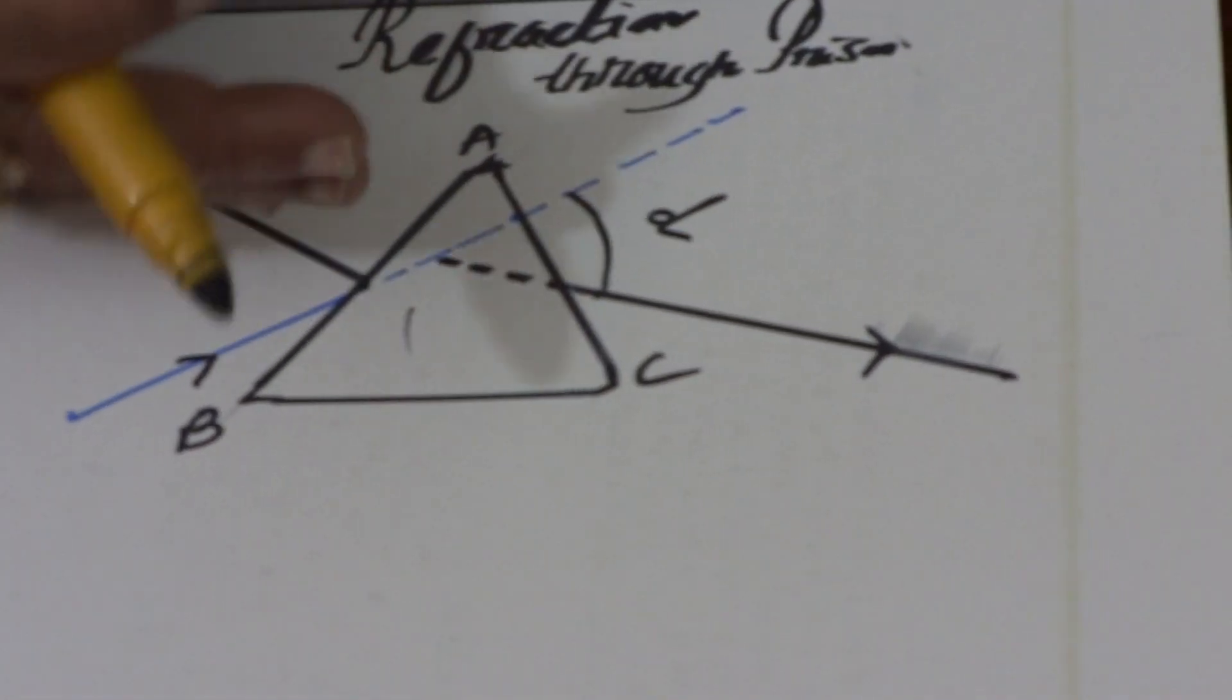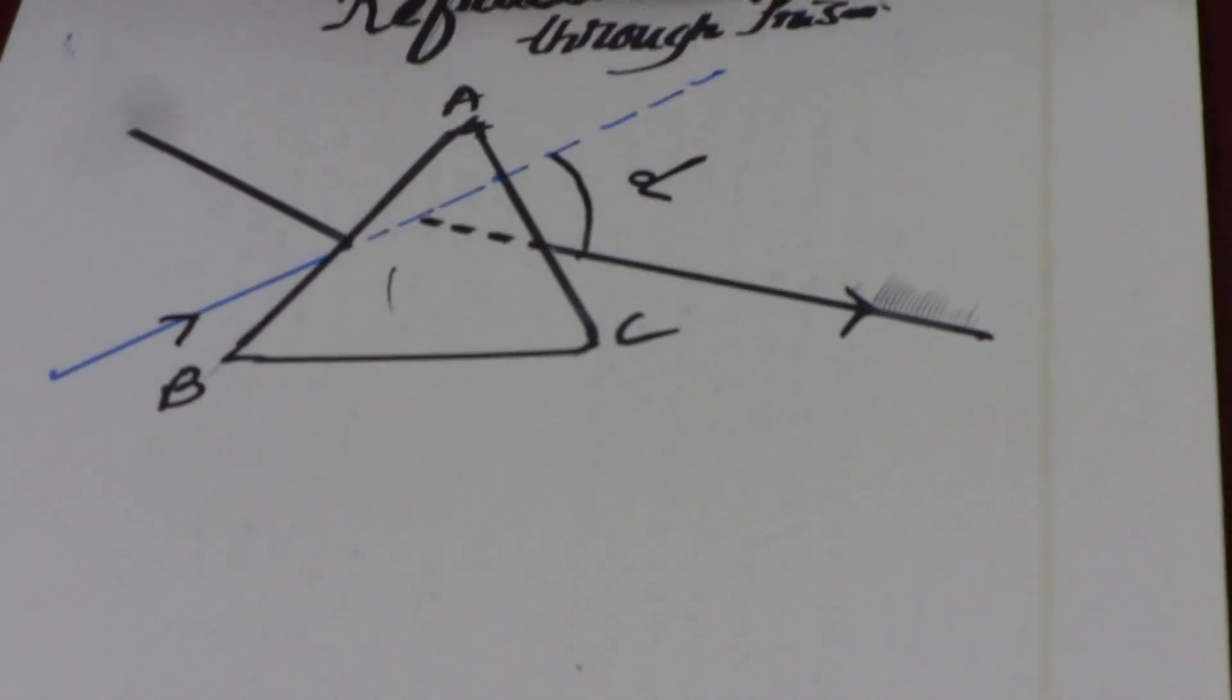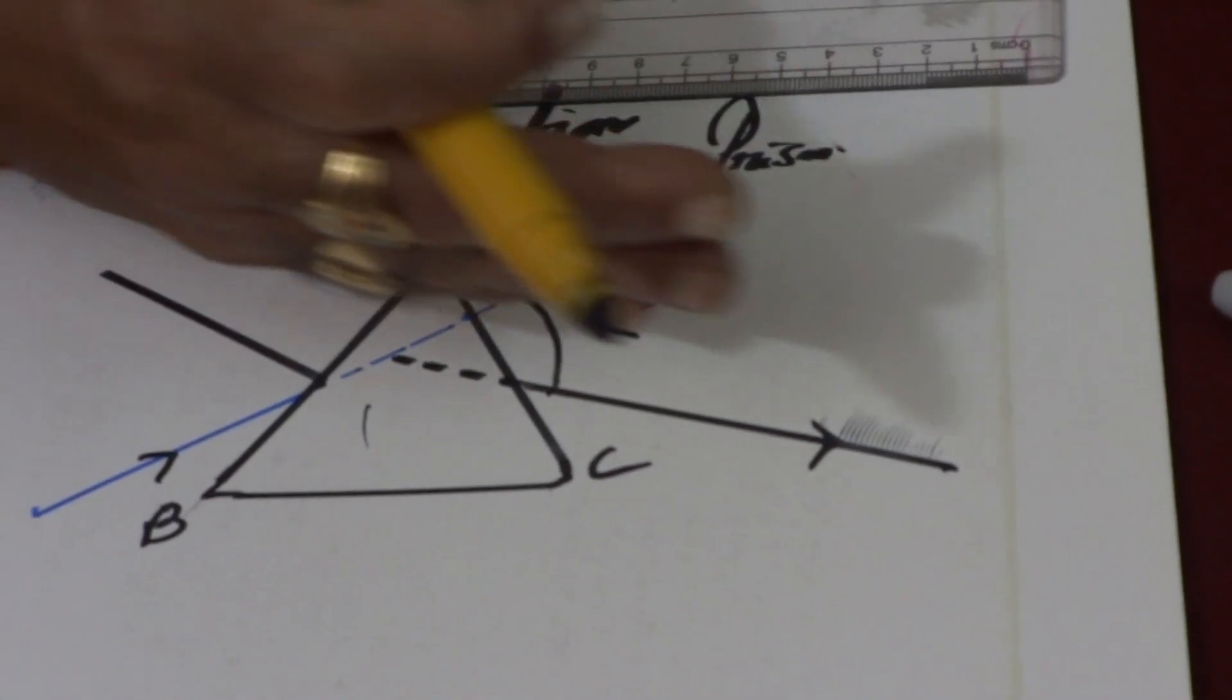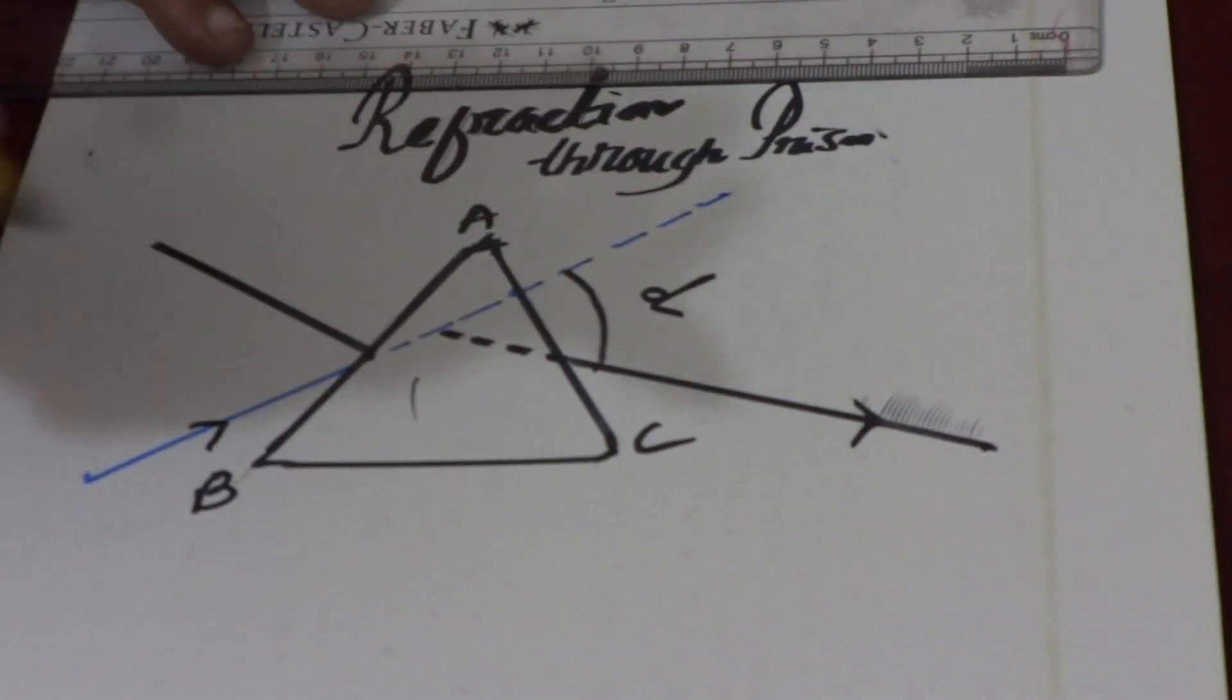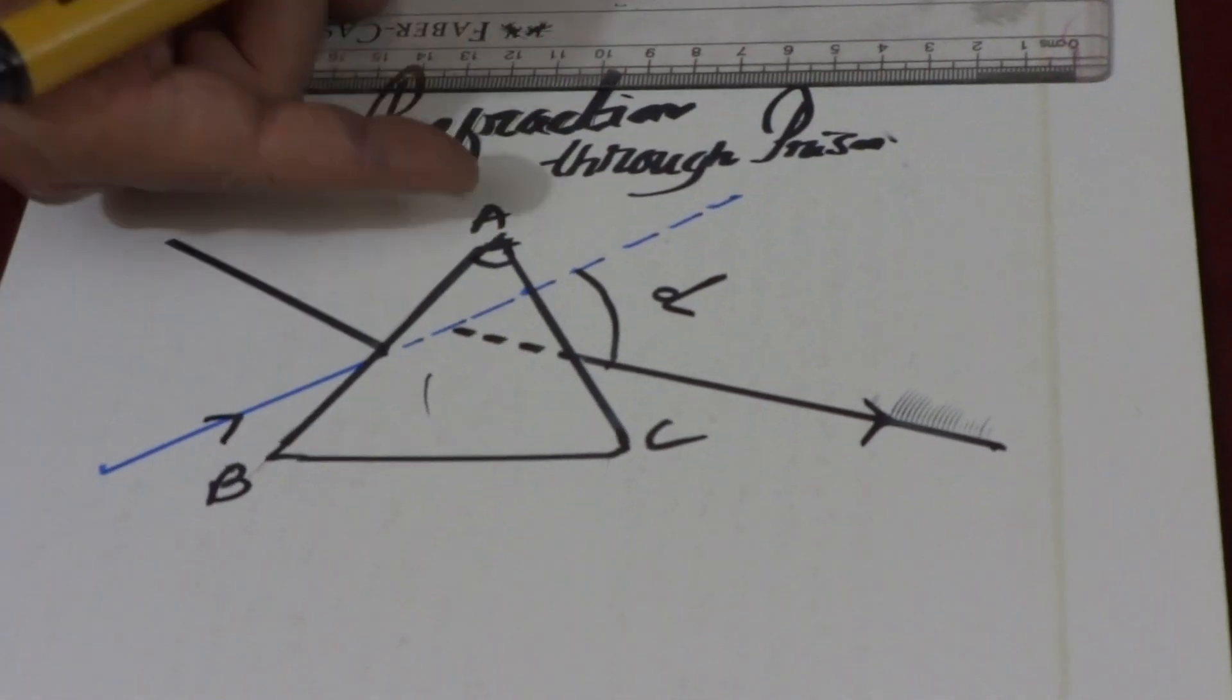So if there had been no prism, it would have gone straight along the line of the blue. But by keeping the prism, it has gone finally in this direction. So here, this is angle of prism.